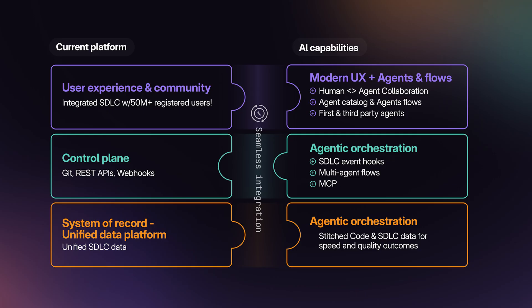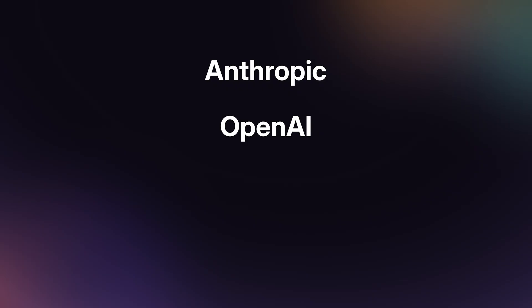We believe the future of software engineering is inherently a human and AI collaboration, and Duo Agent Platform is our path to bring agentic AI across the software lifecycle by integrating AI-native capabilities at every layer of the GitLab platform. In our last release, we shared how we're extending our user experience to make collaborating with agents at every touchpoint a natural and intuitive experience. We announced partnerships with Anthropic, OpenAI, Amazon, and Google to bring the world's best agentic AI technology into the platform, and we delivered our first beta of the official GitLab MCP server in partnership with Cursor to deliver on our interoperability promise.